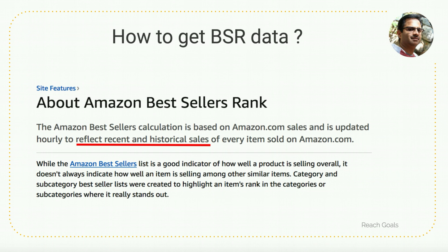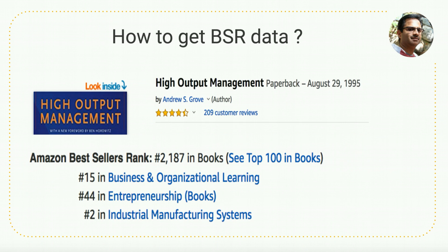Now let's see how to get the BSR data. Amazon uses current sales as well as some historical data to figure out ranking, and they do not use any future sales or predictive algorithms. For example, consider the book 'High Output Management,' published August 29, 1995. It is still one of the most popular books, with a ranking of 2,187 in the Books category and rankings of 1,544 and number two in different subcategories.